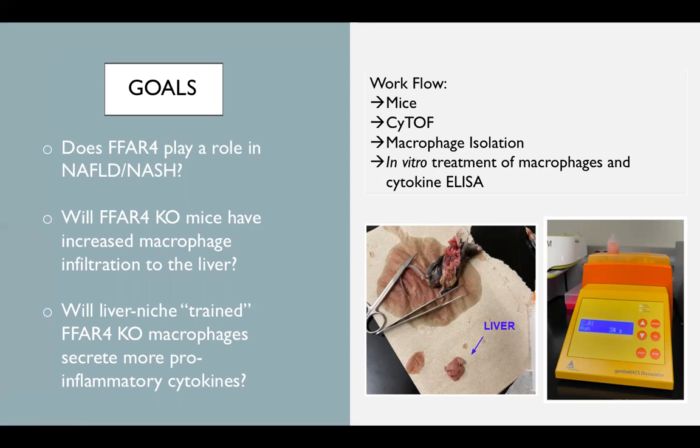From the remaining dissociated cells, macrophages were positively selected using anti-F4/80 magnetic beads. 50,000 liver macrophages were plated in 96 well plates and treated with 400 micromolar palmitate for 24 hours before collecting cell supernatants for pro-inflammatory cytokine secretion.